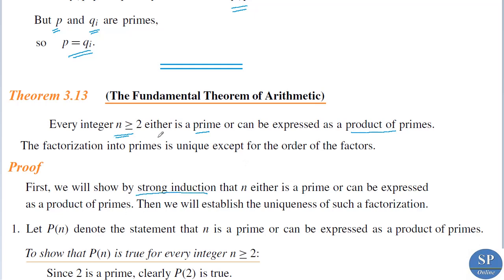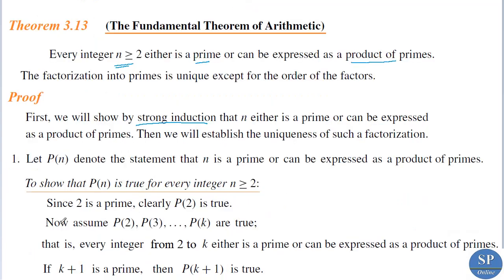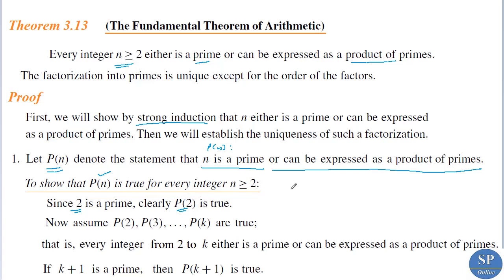To prove the first part, let P(n) denote the statement that n is a prime or can be expressed as a product of primes. To show that P(n) is true for every integer n ≥ 2, we use strong induction. For n = 2, P(2) is true because 2 is a prime. The statement P(2) is: 2 is a prime or can be expressed as a product of primes. Since 2 is a prime, P(2) is true.